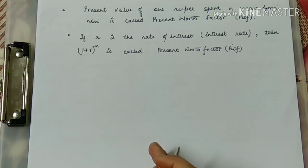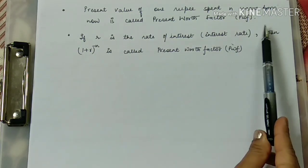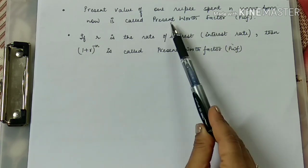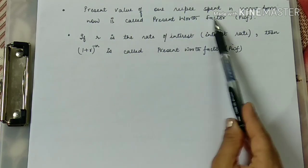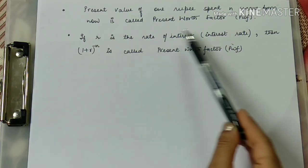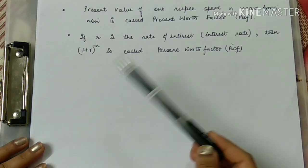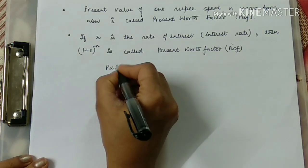When money value changes, for example, in 2019 the value of 100 rupees is 100 rupees, and in 2020 it will be 110 or 111 — every year there is an increment in the value of money. So in this chapter, the key factor to keep in mind is the present value of one rupee spent n years from now, which is called the present worth factor.